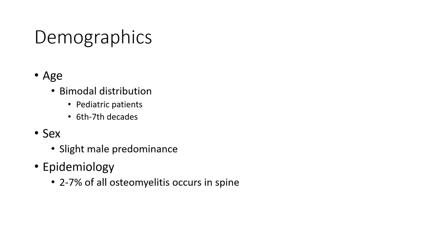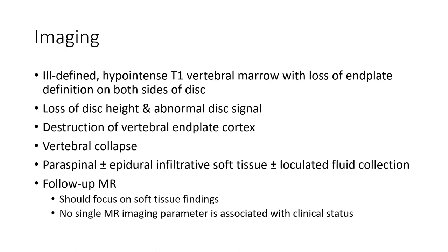Epidemiology: two to seven percent of all osteomyelitis cases involve the spine. Imaging findings on MRI include hypointense T1 and abnormal T2 vertebral marrow signal, with loss of end plate definition on both sides of the disc, destruction of the vertebral end plate, and paraspinal plus or minus epidural inflammatory soft tissue.